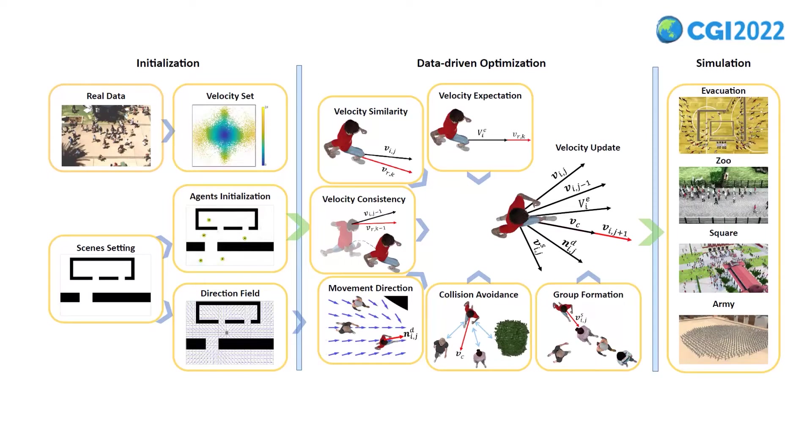In the simulation stage, we simulate crowds with various movement patterns in diverse environments. The decision-making of each agent is formulated as an optimization problem, whose energy function considers velocity similarity, velocity consistency, velocity expectation, movement direction, collision avoidance, and group formation jointly.